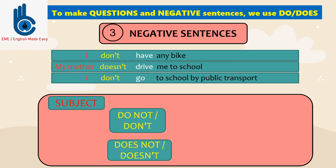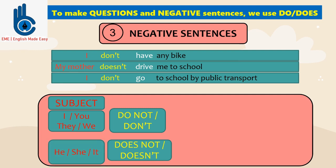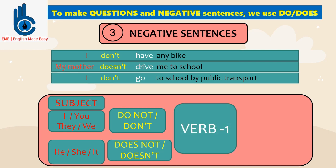Do not is used for the subject I, you, they, or we. While does not or doesn't is used for subject he, she, or it. And then continued by verb one.